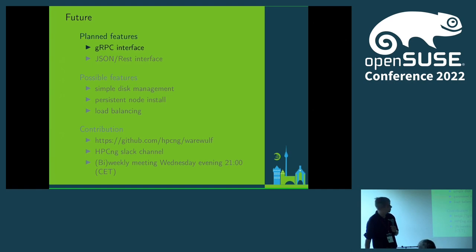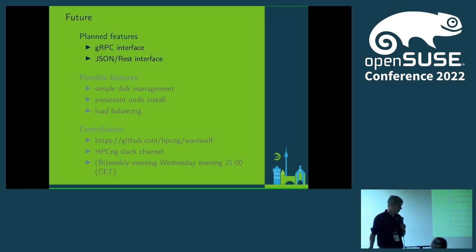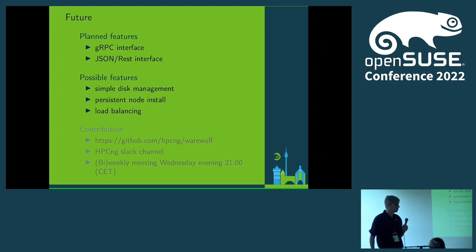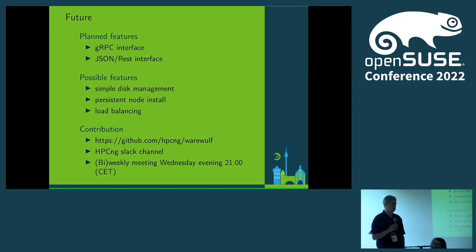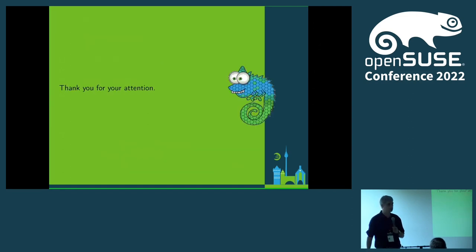Now for the features of 4.3.0: what's planned is a gRPC interface and a JSON REST interface to the warewulfd server, so you can have a web application or other tools to get the state of your cluster or change things. Possible future features we're looking into include simple disk management for more stateful setups, persistent node install — which many people are asking for — and load balancing. You can contribute on GitHub, there's a Slack channel, and there is a meeting every Wednesday at 9 o'clock where the development team meets.